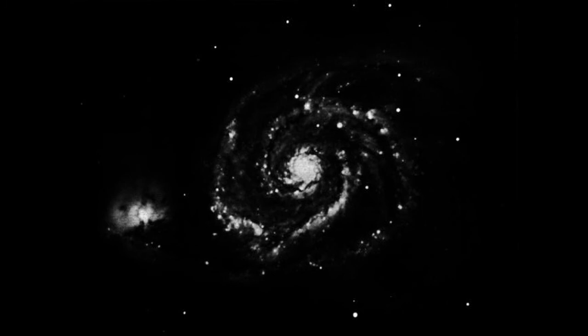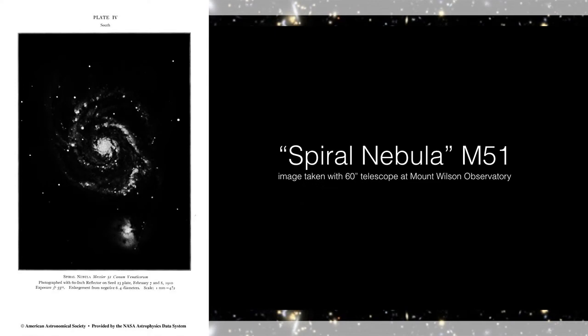Just under a hundred years ago, this was one of the most controversial images in the entire universe, which is surprising because it kind of doesn't look like very much — it kind of just looks like a big swirly cloudy spirally nebulosity. And in fact that's exactly what it was known as. This picture is of the spiral nebula M51.